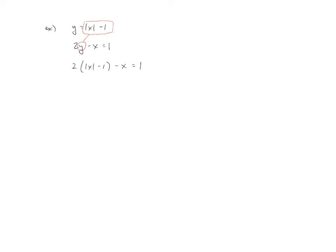Now we have an absolute value equation to solve, which means we need to isolate the absolute value. I'll multiply the 2 in, then add x to both sides and add 2 to both sides, giving us x plus 3 on the right. Finally we have the absolute value of x equals (x plus 3) over 2. We've isolated the absolute value, so now we set up two different equations: x equals (x plus 3)/2, and x equals the opposite of (x plus 3)/2.